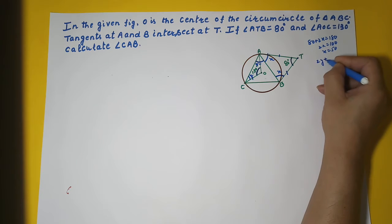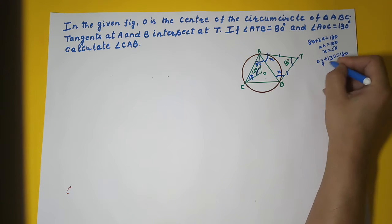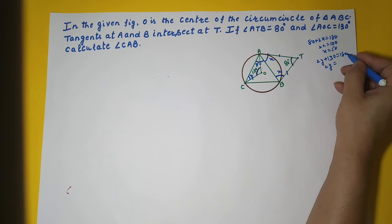2Y plus 130 equal to 180. So your 2Y is equal to 180 minus 130, which is 50. So you got Y as 25.